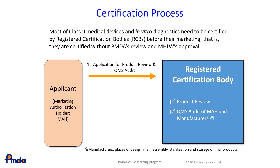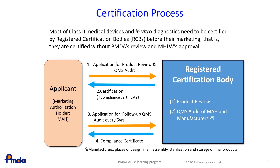The RCB conducts product review and QMS audit on the MAH and manufacturers and determines whether they meet all the requirements. If they do, the RCB issues a certification of conformity to the requirements and the MAH can market the product. The MAH and manufacturers are required to be audited every five years after certification.